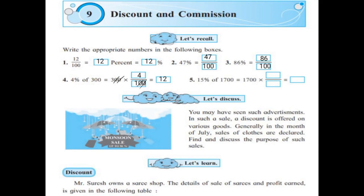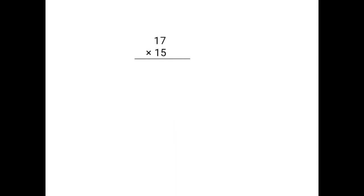15% of 1700 means 1700 into 15 upon 100. The zeros get cancelled on numerator and denominator. Now you have to multiply 17 into 15. 5 times 7 is 35. 3 you have to carry off.